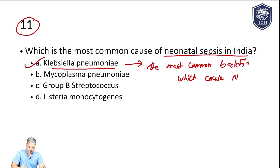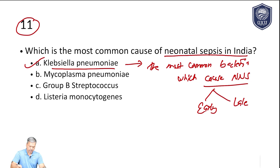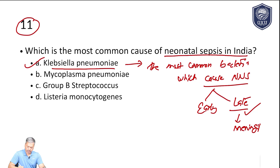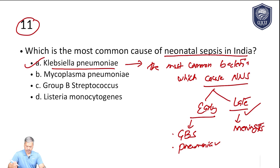Neonatal sepsis is of two types: early and late. Klebsiella pneumonia usually causes the late type of neonatal sepsis, and meningitis is the common presentation in that case. Early neonatal sepsis is predominantly caused by Group B Streptococci, and pneumonia is the most common presentation. Sepsis can occur in both types.